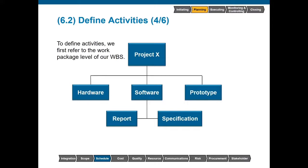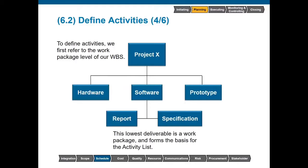For further decomposition, we are going to take our WBS and look for our work packages. In this case, we have Project X as our deliverable at the top, with three categories: hardware, software, and prototype. Within software, we have reports and specifications. With a report, we would say we probably can't decompose it further because we don't want to break it up into individual paragraphs or lines — so we are at the lowest level, the work package, and this will be the starting point for our activities list.